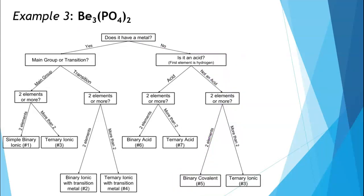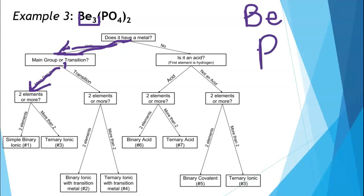Next example: Be3(PO4)2. This looks more complicated, but we can still follow the chart. Does it have a metal? Beryllium (Be) is in group two — yes, it has a metal. Is it a main group or transition metal? Group two is a main group metal. Does it have two types of elements or more? We have beryllium, phosphorus, and oxygen — that's more than two types of elements, which makes this a ternary ionic compound, naming rule number three.